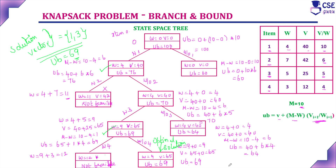This is the procedure to construct the state space tree using branch and bound technique to solve the knapsack problem. This is a binary tree — keep in mind that in the travelling salesman and assignment problem, the construction of the state space tree is not a binary tree. But in the knapsack problem, construction of the state space tree is a binary tree. This video is a continuation of the previous video, which showed only the steps to calculate the upper bound value. The link will be provided in the description for reference.